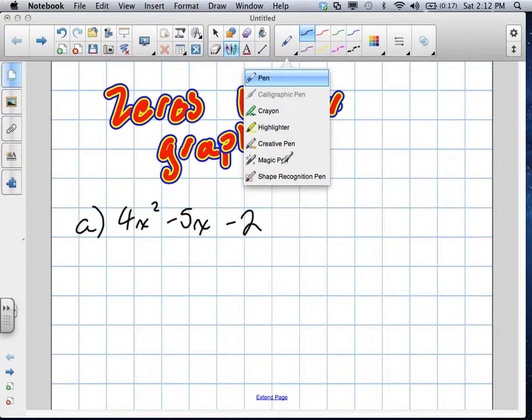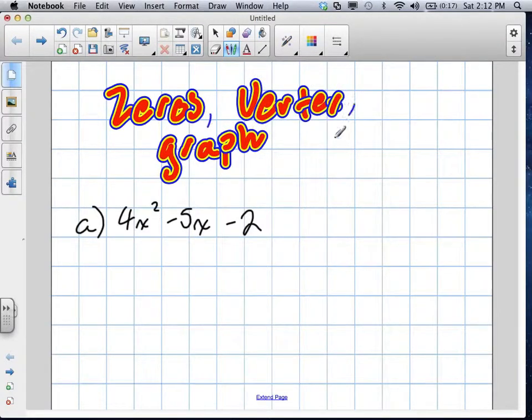So, this question asks us to find the zeros, vertex, and to graph this quadratic equation. A couple things we want to go over. First of all, do you know what form this is in of a quadratic? They have three major forms.